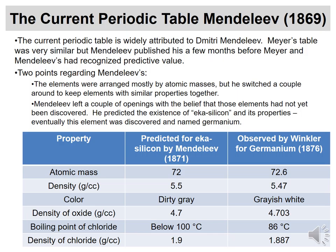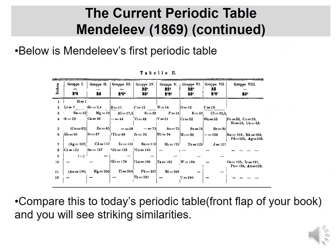He also left holes in places where there didn't seem to be an element. For example, he called one 'ekasilicon,' which ended up being germanium. His predictions were atomic mass 72, density 5.5, and so on — and once germanium was discovered, it had similar properties. So he had a very powerful periodic table and was able to predict things nobody else could. Mendeleev gets most of the credit, and his periodic table looks a whole lot like ours.